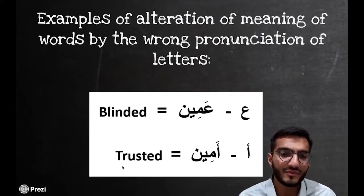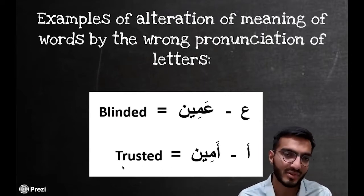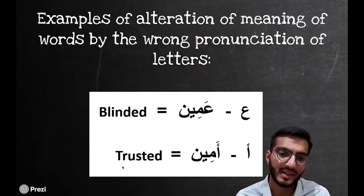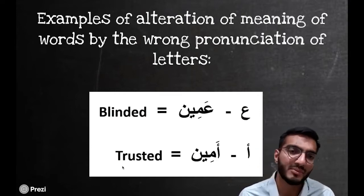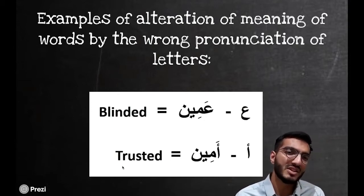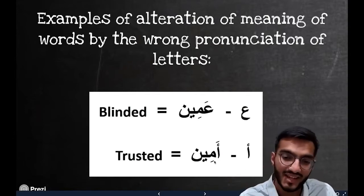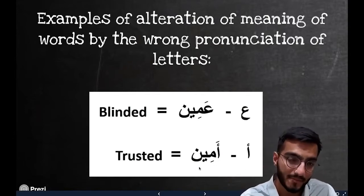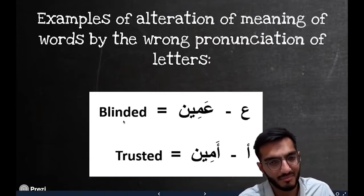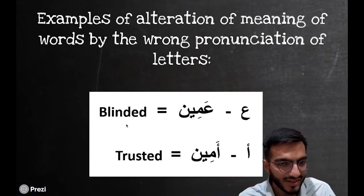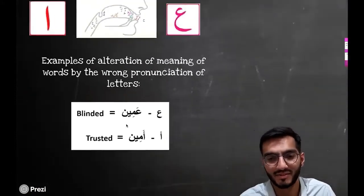Just going through a few examples of how important it is to pronounce Alif and Ayn in the right way. Because as we all know, if we pronounce the words a bit wrong and differently, then it changes the whole meaning. For example, 'Ameen' with an Alif means 'trusted.' So just something to ponder and to be aware of — the importance of pronouncing the letters correctly.